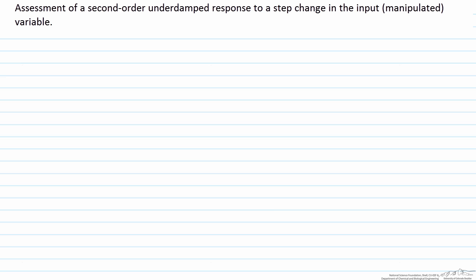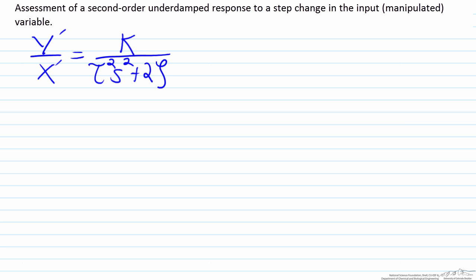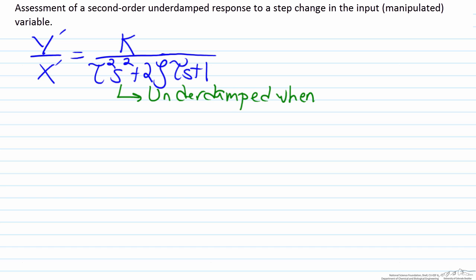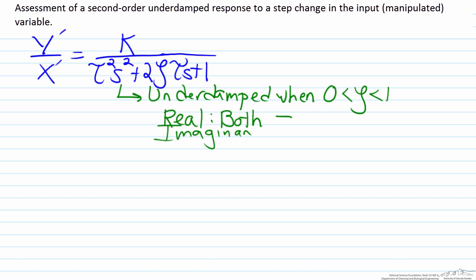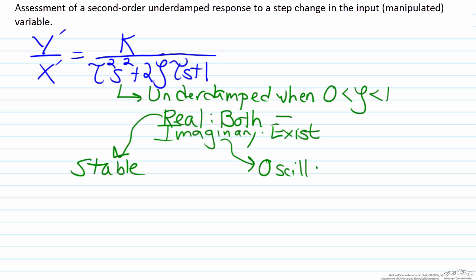To start, let's write down the transfer function for a generic second order transfer function, which is k over tau squared s squared plus two zeta tau s plus one. The process is considered underdamped when zeta is between zero and one. This range means the real part of the two roots will both be negative and the imaginary part of the root will exist, indicating the process is stable and will oscillate. So therefore we are going to have a stable oscillatory response.